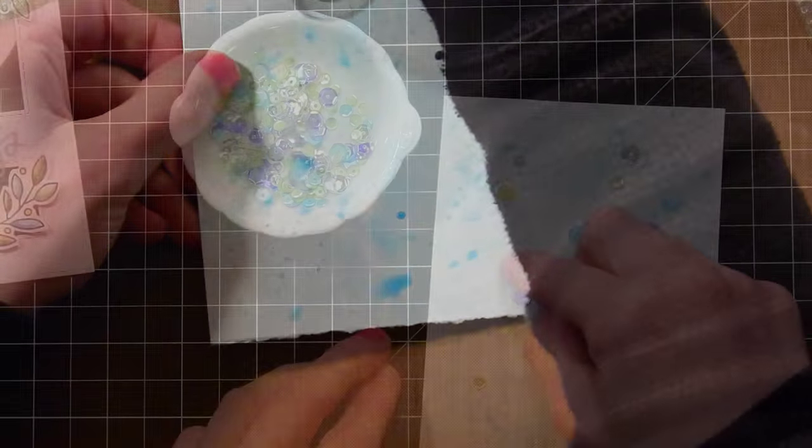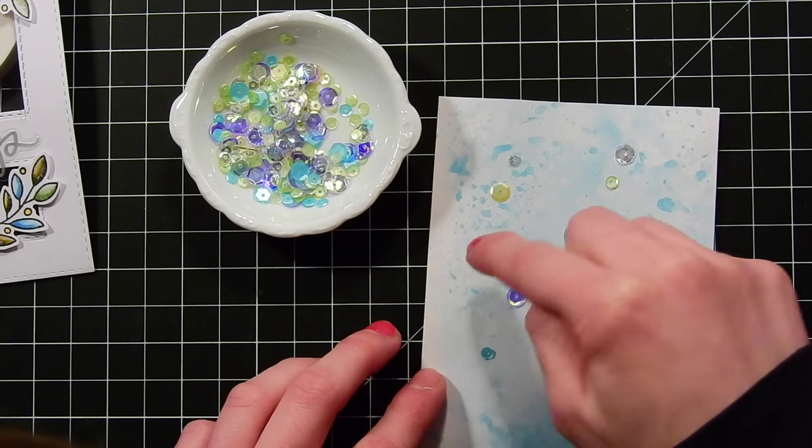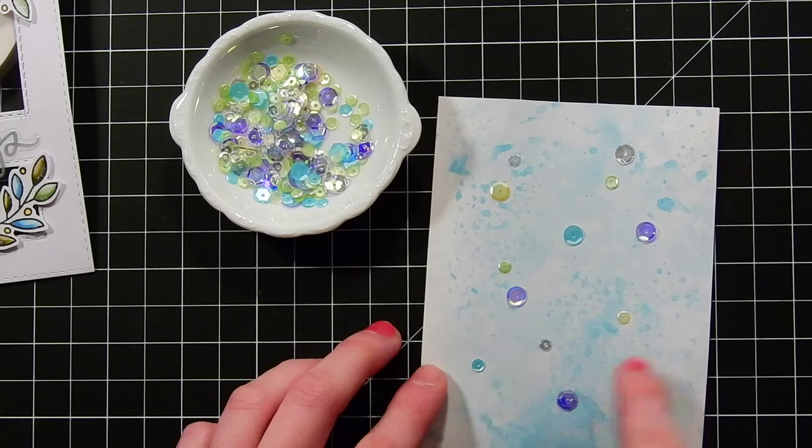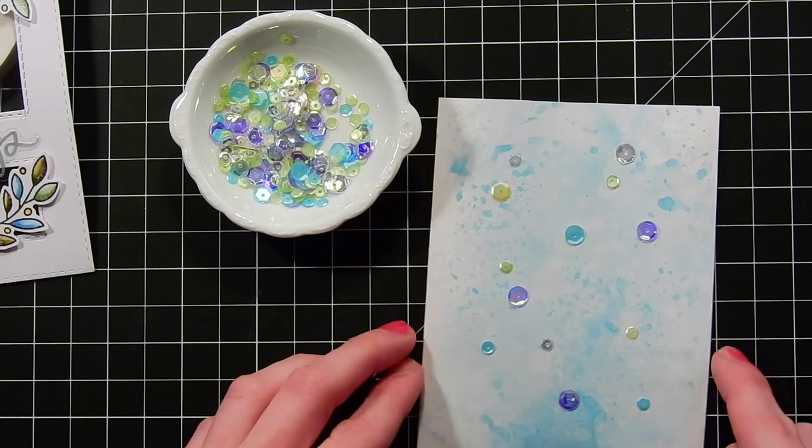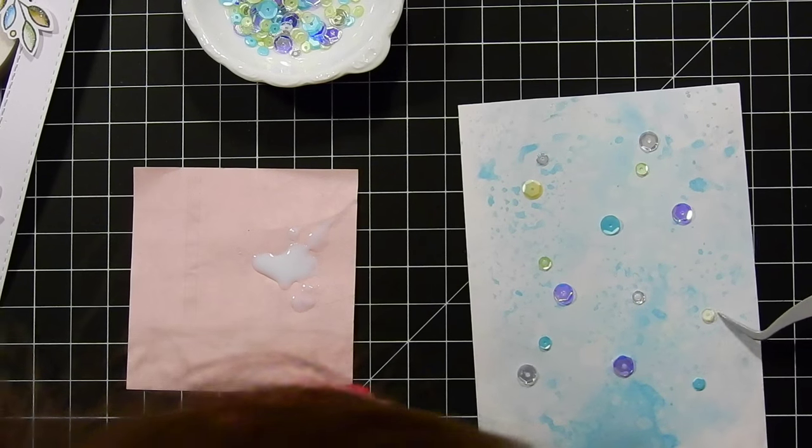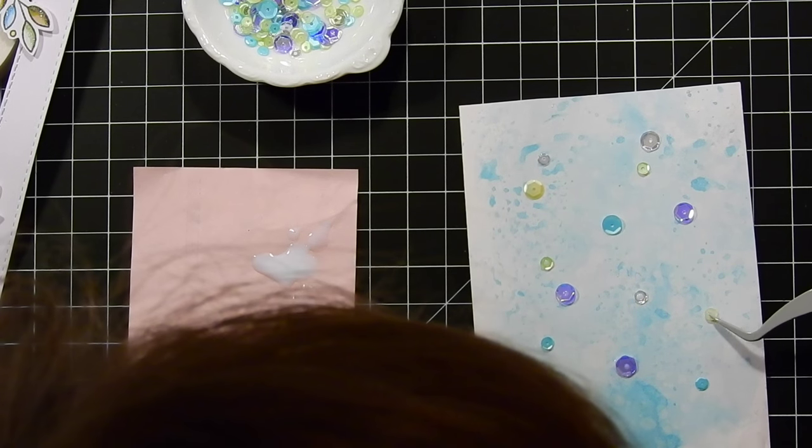So here I'm adding some more texture using some sequins. This, of course, is more of a bumpy surface now when I'm adding the sequins. And I'm going to be attaching those onto my panel using some PPA Matte Adhesive.